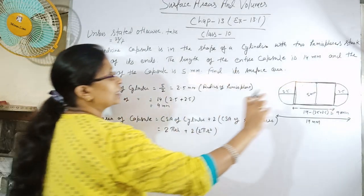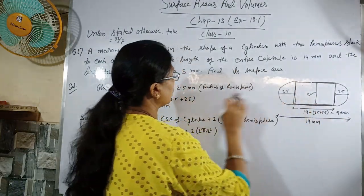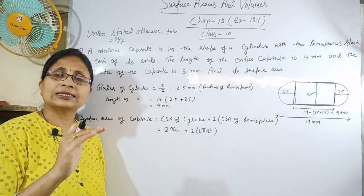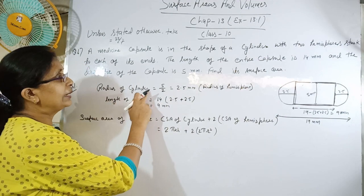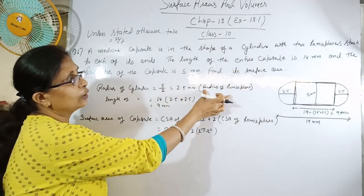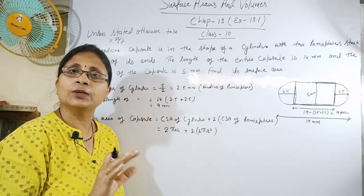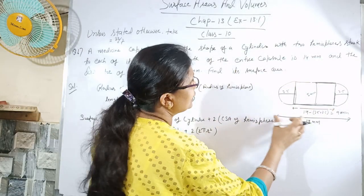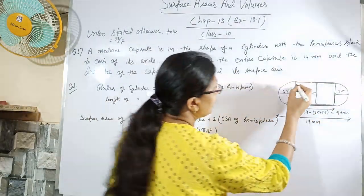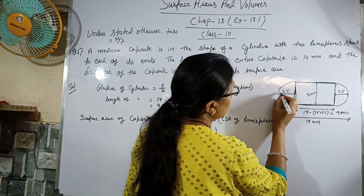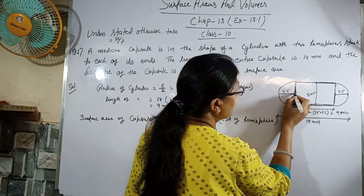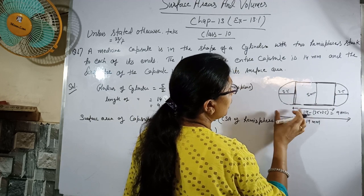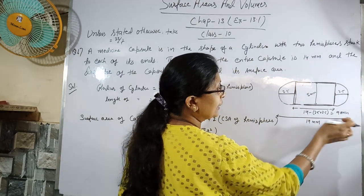Radius of cylinder क्या होगा? Hemisphere का radius और cylinder का radius equal होगा। Radius of cylinder = radius of hemisphere = diameter/2 = 5/2 = 2.5 mm. Length of cylinder निकालने के लिए: यहाँ से यहाँ तक 2.5 mm, और यहाँ से यहाँ तक 2.5 mm, और total length 14 mm है।